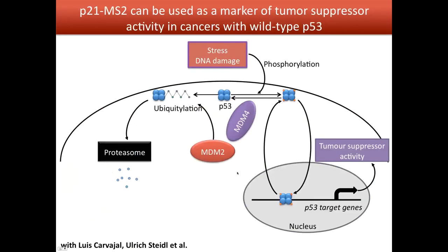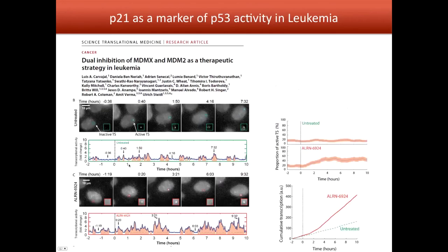Moving to a slightly different topic: since p21 is under the control of p53, and p53 is both a stress marker and an apoptosis marker, we can use this system to detect the activity of cancer drugs. I worked with the Ulrich Stator lab using the drug LRN-6924, which is an inhibitor of both MDM2 and MDMX. This drug is currently in clinical trials to fight leukemia. Our system gave us a very good tool to detect the activity of these drugs on living cells and to find synergistic effects between different drugs at different concentrations.